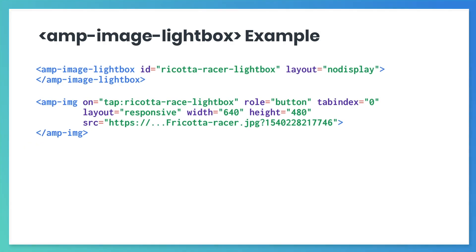If you add this code to the large image at the top of our cheese spikes page, you'll get to see the amp-image-lightbox in action. You have to give the lightbox an ID, and then you invoke that ID in the event handler of the amp-image. The great part is you won't even need to specify an action, and you're off to the races.